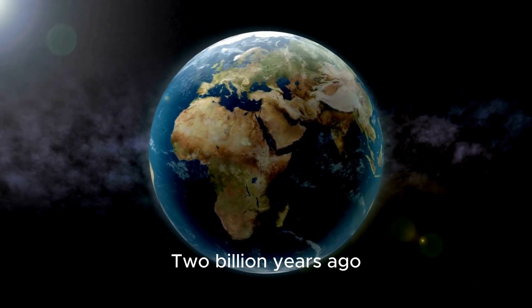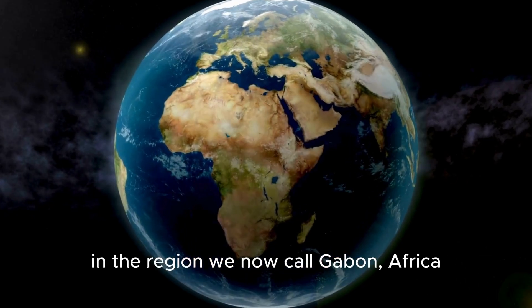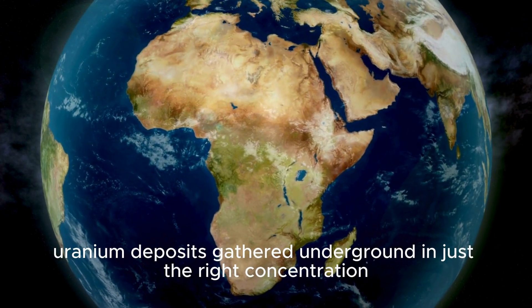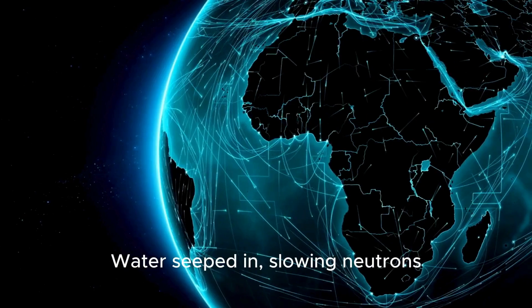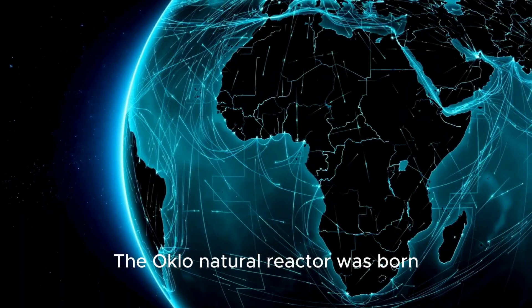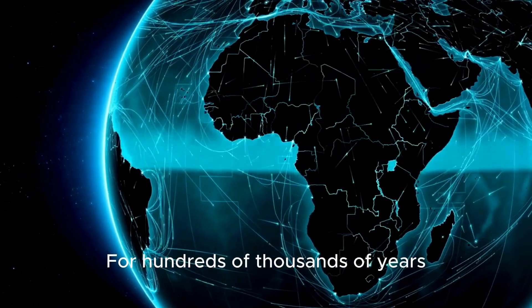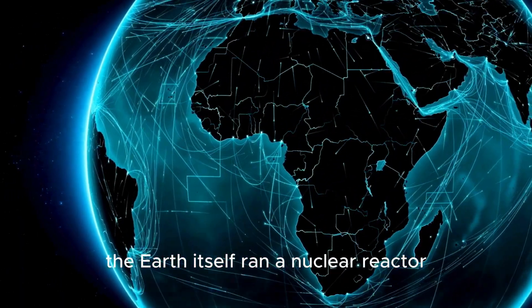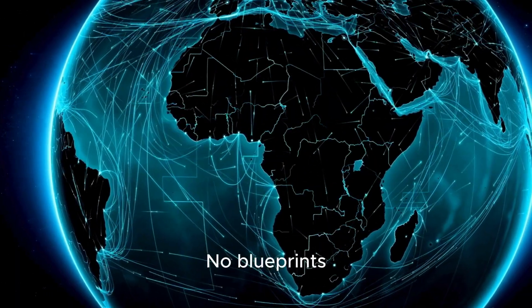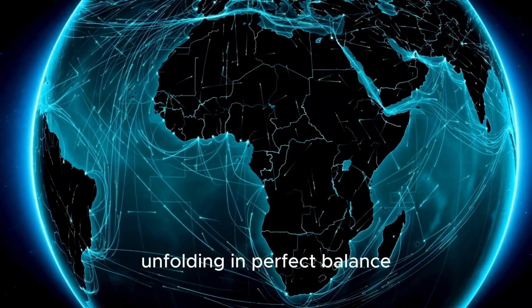Two billion years ago, in the region we now call Gabon, Africa, uranium deposits gathered underground in just the right concentration. Water seeped in, slowing neutrons, triggering a chain reaction. The Oklo natural reactor was born. For hundreds of thousands of years, the Earth itself ran a nuclear reactor. No engineers. No blueprints. Just physics, unfolding in perfect balance.